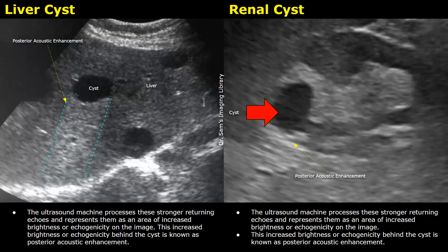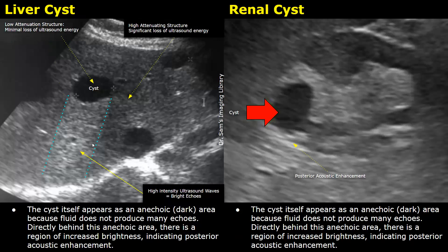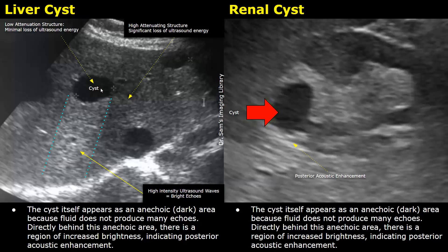The reflected ultrasound waves from the region behind the cyst are received by the ultrasound machine. The machine processes these signals and displays bright posterior acoustic enhancement. The cyst itself does not produce echoes, which is why it appears anechoic. The bright area behind the cyst has high-intensity echoes because the ultrasound waves lose very little energy passing through the cyst. This low attenuation leads to acoustic enhancement, making this area appear bright.